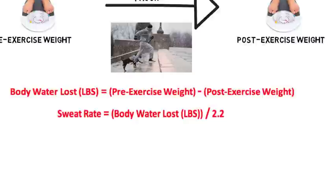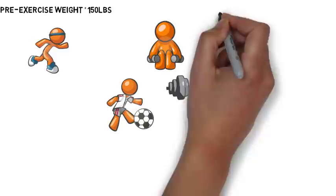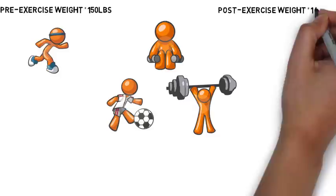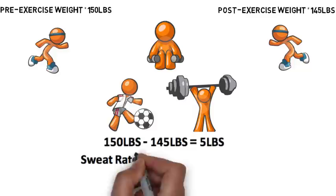Here we have our athlete. Our athlete took a nude body weight before he worked out for an hour. His body weight was 150 pounds. After an hour of exercise, our athlete will then take another body weight. Astoundingly, our athlete pushed himself and now weighs in at 145 pounds. To see how much fluid our athlete needs to replace, subtract the post-workout weight from the pre-workout weight. Our athlete lost 5 pounds whilst exercising.